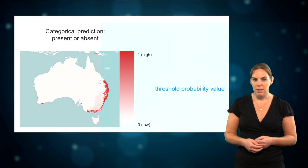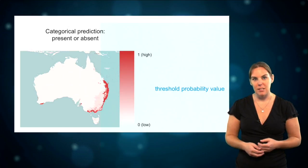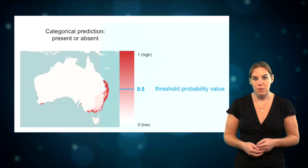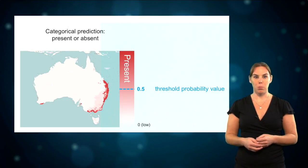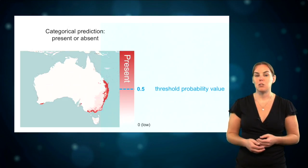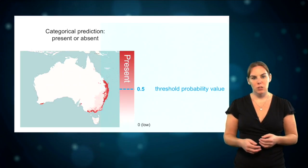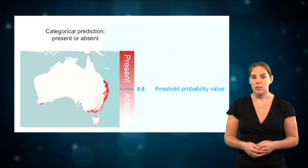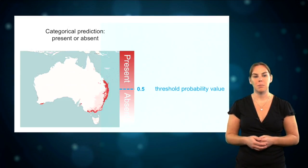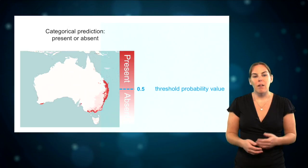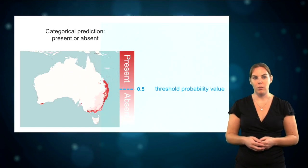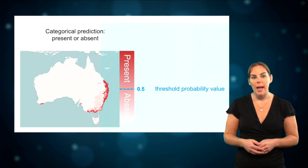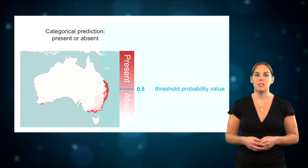By convention, this threshold is often set at 0.5, which means that for each location with a probability above 0.5 the prediction is positive, thus the species is present, and locations with a probability below 0.5 are predicted to be negative, thus the species is absent. However, there are a lot of different methods for selecting the threshold value, depending on factors such as the overall error pattern of the model and the ratio of presence versus absence points.